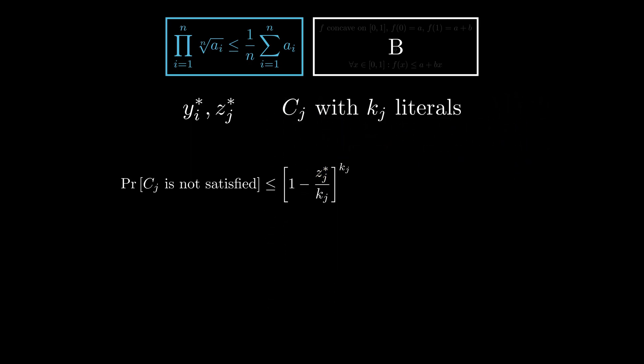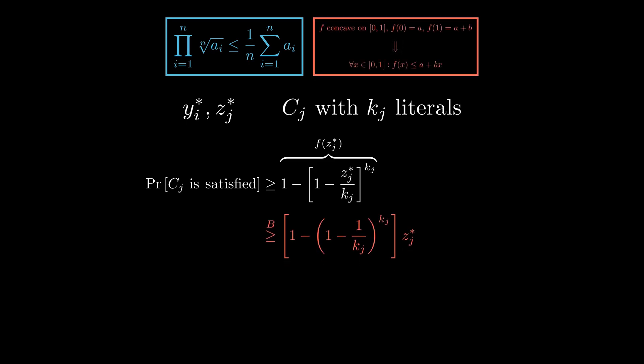Now, let's calculate the probability that it is satisfied. If we take it as a function of z_j, we can observe that f(0) is 0 and that it is concave by checking that the second derivative is positive. This means that we can use Jensen's inequality and get this bound. As Kj goes to infinity, the highlighted expression gets larger and larger, converging to the well-known constant of 1 over e, which is approximately 0.63.